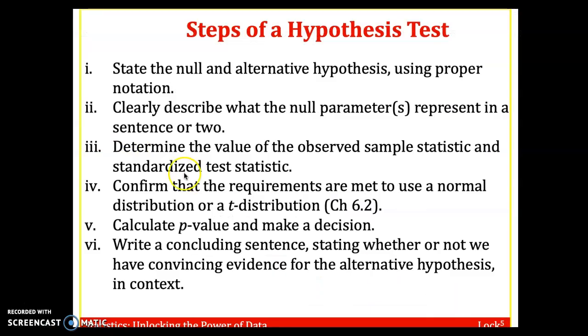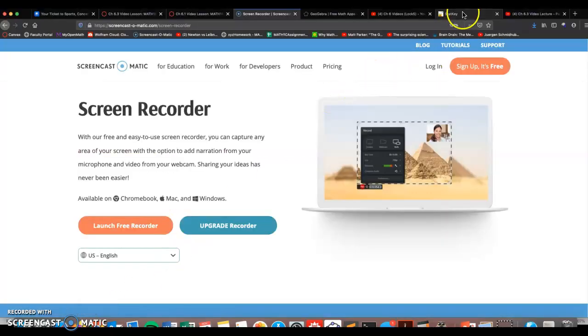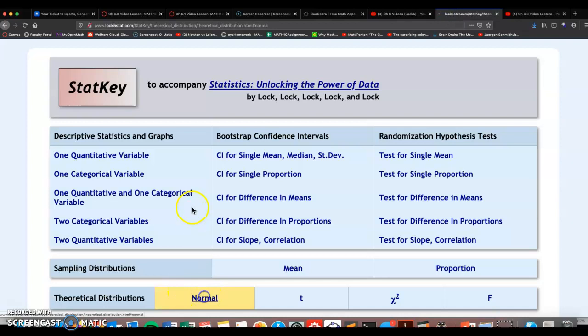And then we are now left with calculate the p-value and make a decision, and then write a concluding sentence. All right, so for p-value, I'm going to go to StatKey, normal distribution.